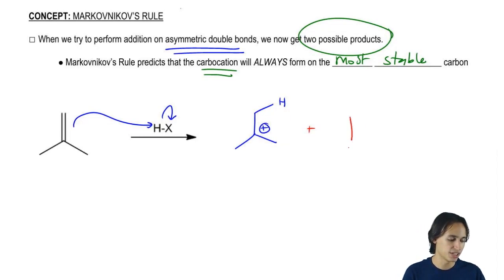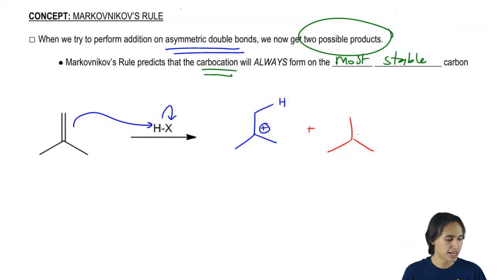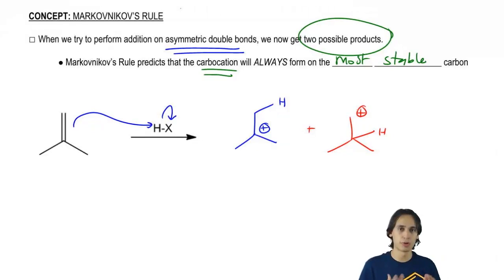But there's also the possibility, since this is asymmetrical, notice that my double bond has completely different things at the top and the bottom, that I had the H at the bottom and my carbocation at the top. That's another possibility of this addition reaction. So which of these two is going to be the more stable carbocation?